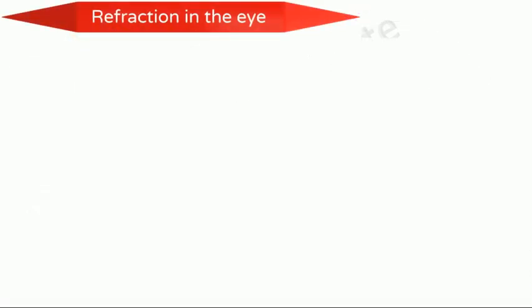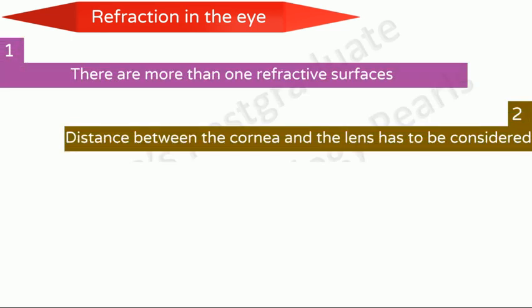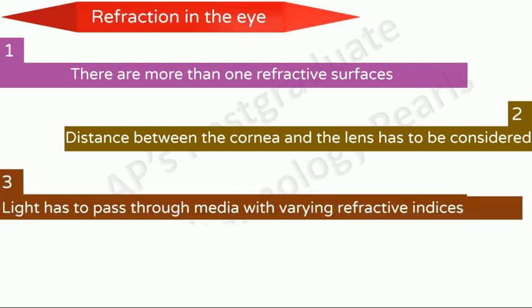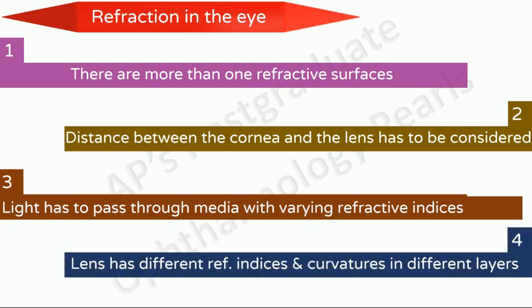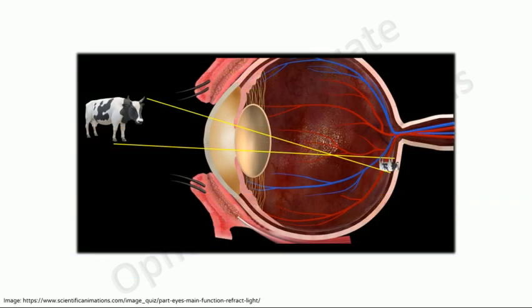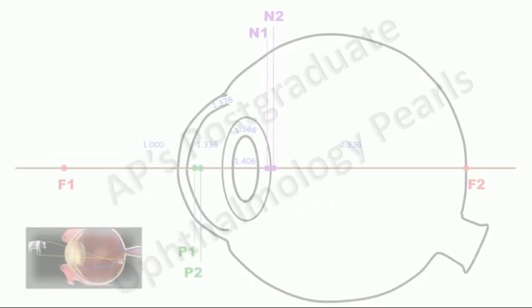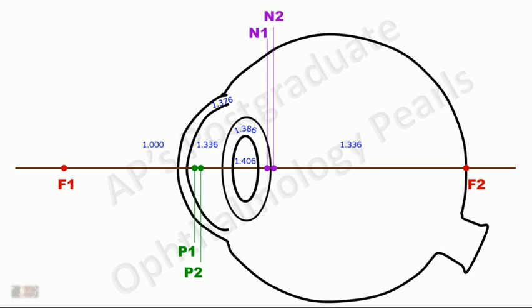The refraction of light by the eye is a complex process because there are more than one refractive surfaces. The distance between the refractive surfaces — the cornea and the lens — has to be considered. Light has to pass through media with varying refractive indices, and the lens itself has different refractive indices and curvatures in its different layers. The construction of this process by ray diagrams is not possible with the actual dynamics in place. Hence, in order to study image formation by the eye, a model that allows diagrammatic representation using the curvatures, indices of refraction, and calculated distances exists. This is referred to as the schematic eye.